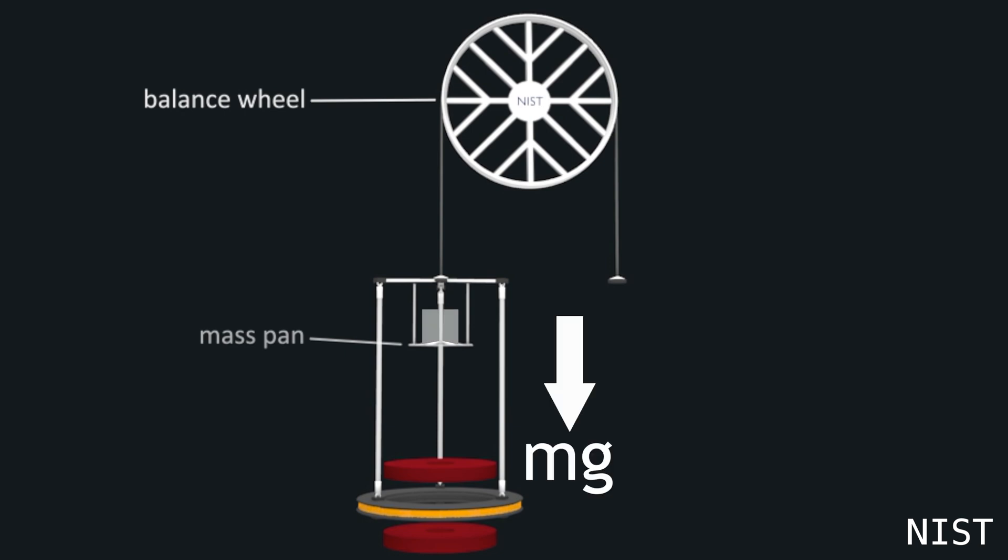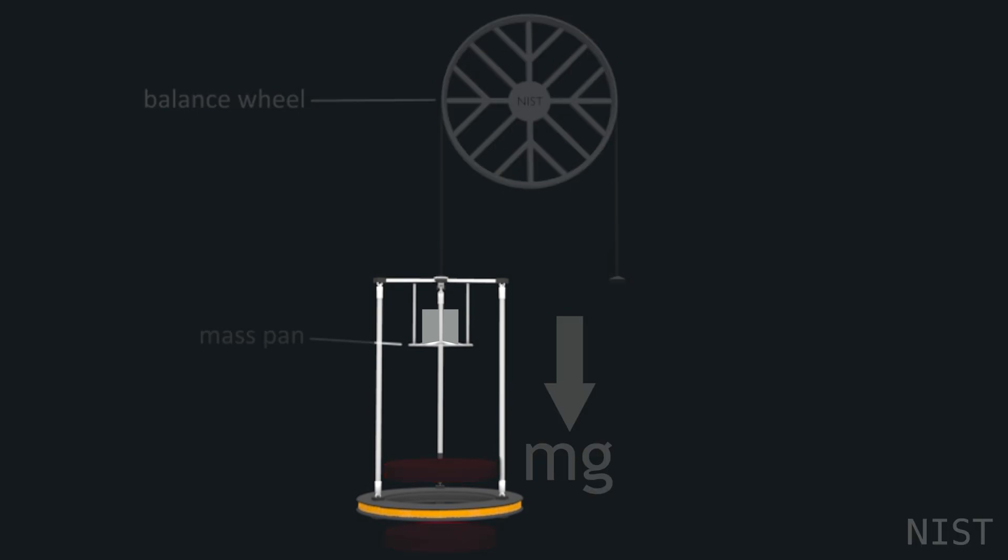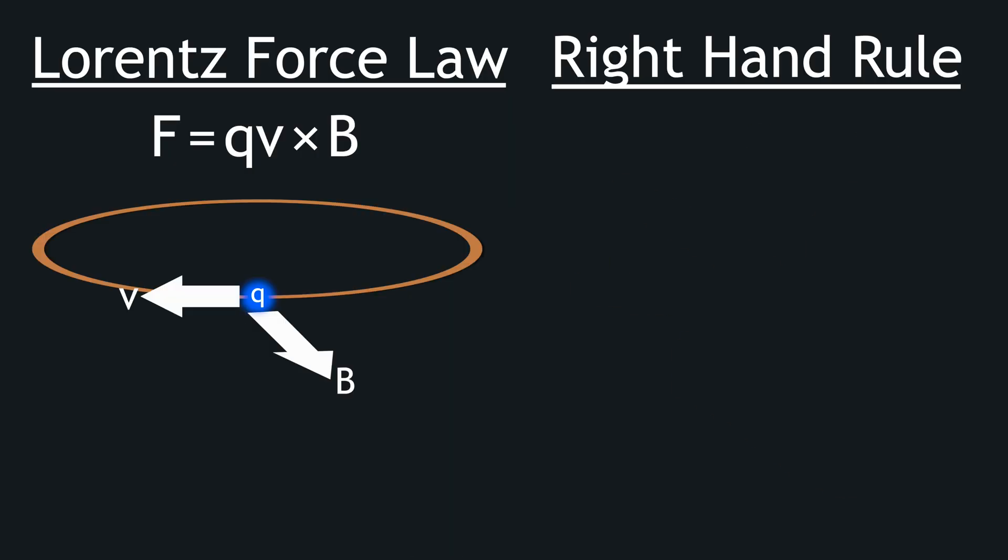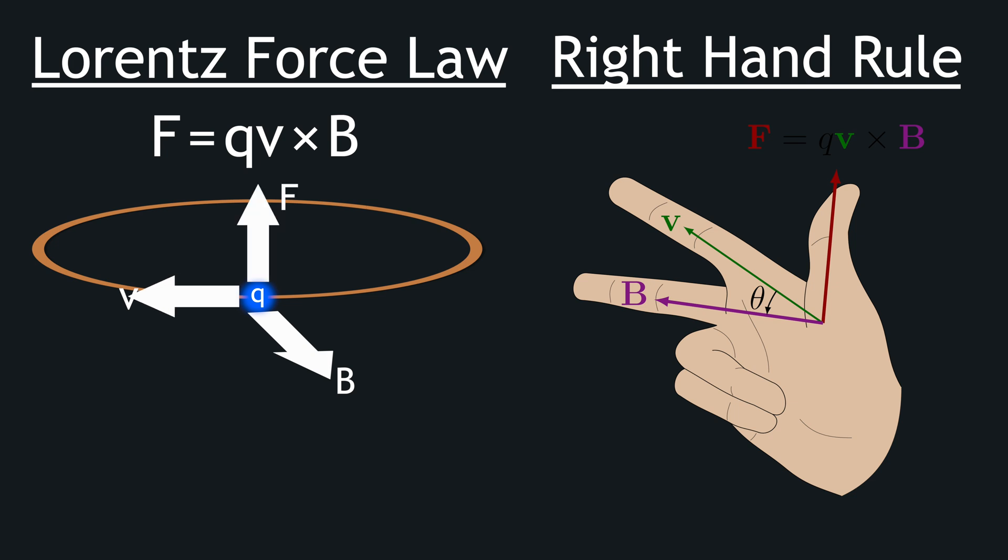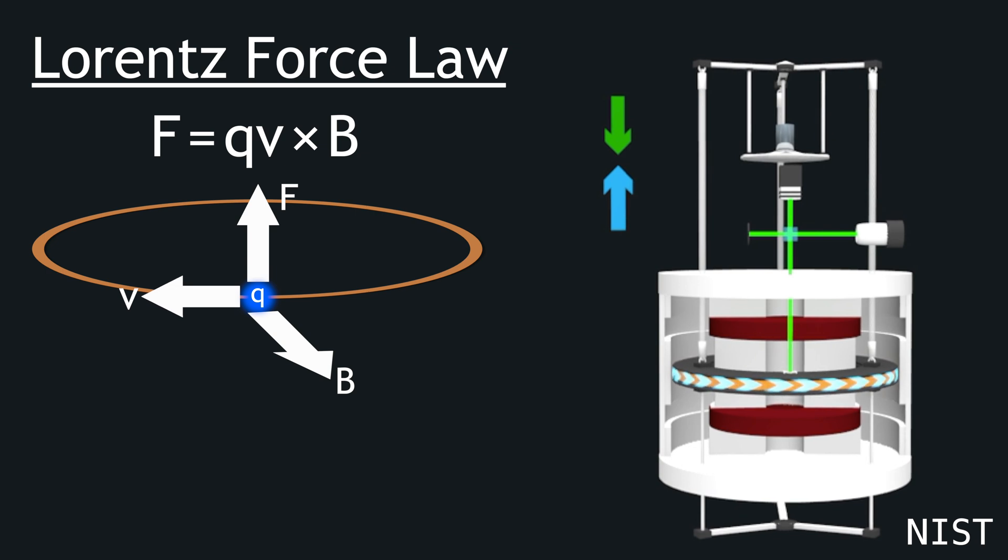But to counteract this force, attached beneath the mass pan is a coil of wire immersed between two powerful magnets. Now, when current is passed through this wire by the Lorentz force law and the right-hand rule, it creates an upward force that, when current tuned carefully, perfectly balances the gravitational force.